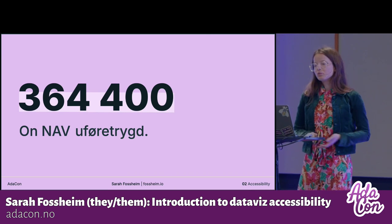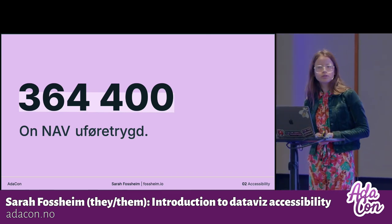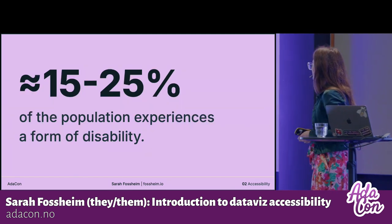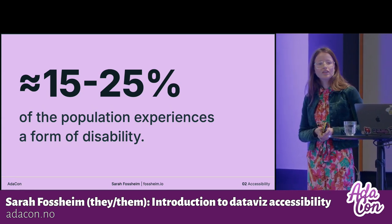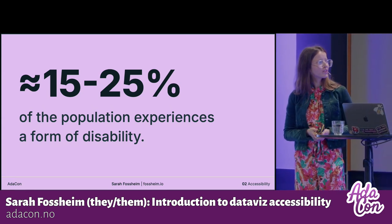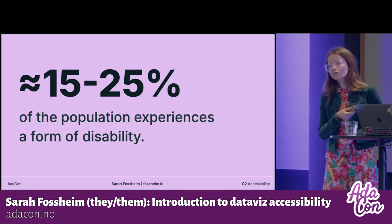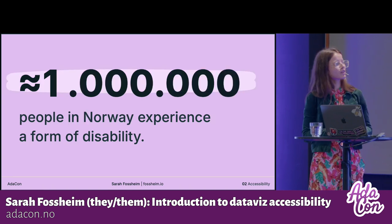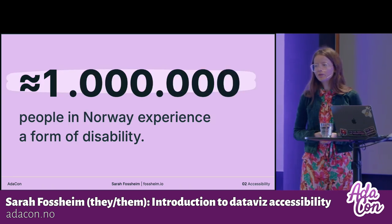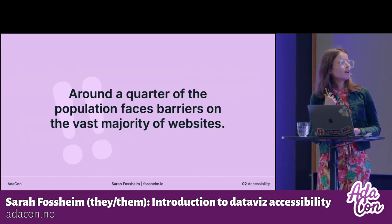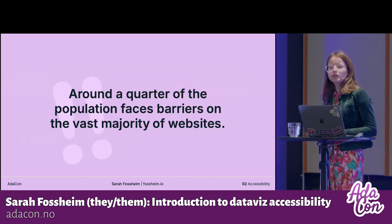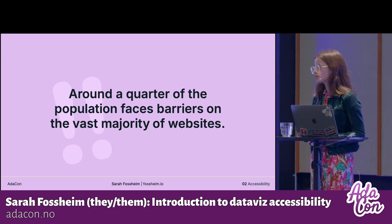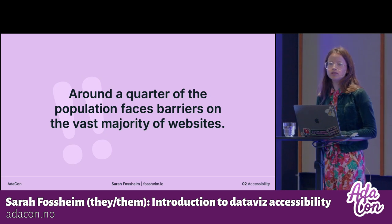In Norway, almost 400,000 people receive support from NAV because they are disabled. Worldwide, around 15 to 25 percent of the population has reported having a disability — 15% from WHO data, 25% based on self-reported disabilities — which is around a million people in Norway, about a fifth of the population. So a quarter of the population, or a million people in Norway, are being excluded or facing barriers on the majority of websites and data visualizations.